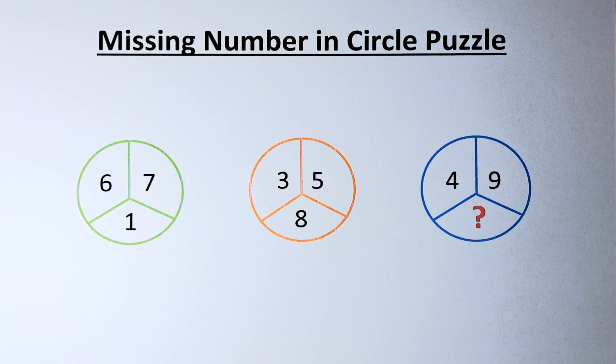The numbers in this puzzle are as follows. In the green circle, we have 6, 7 and 1.